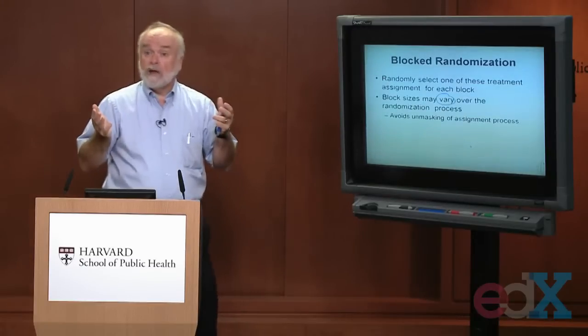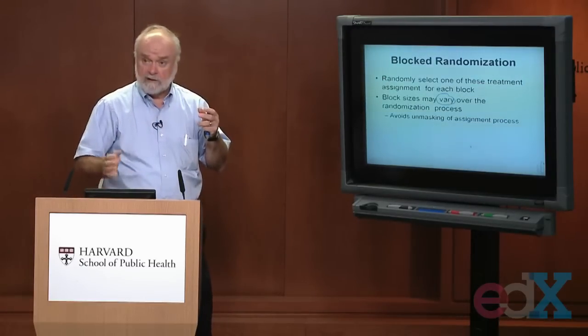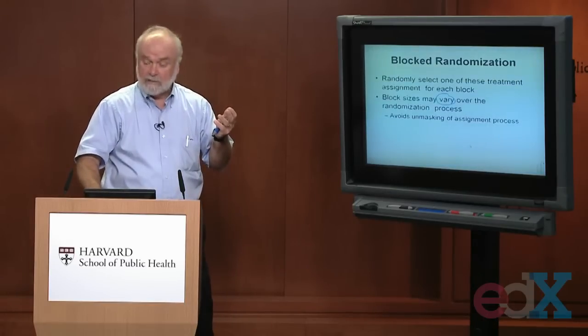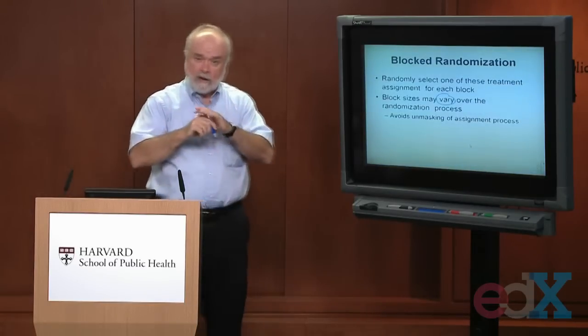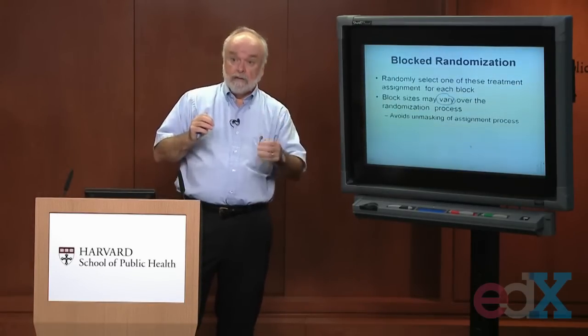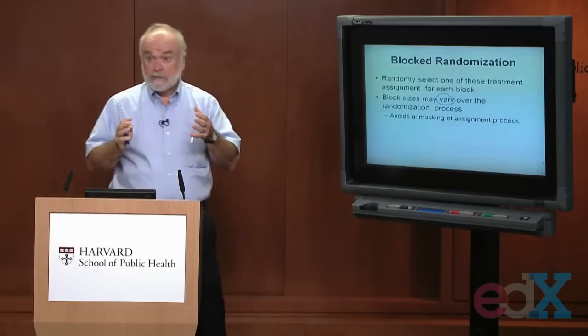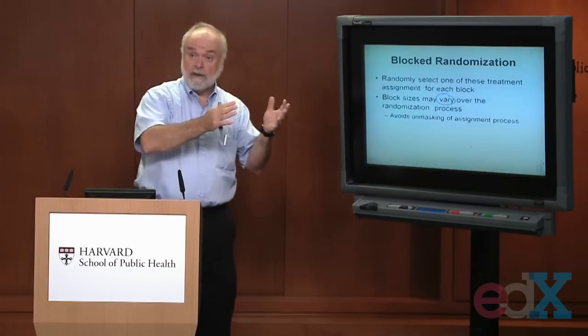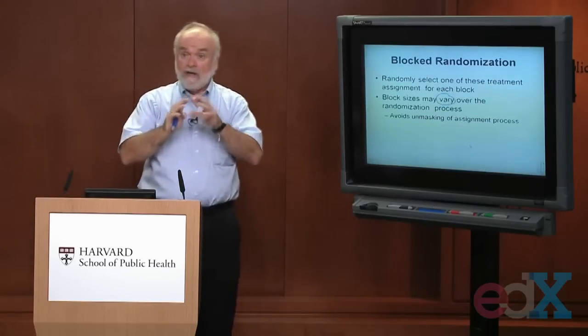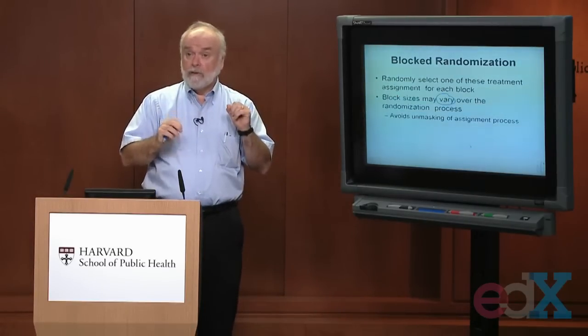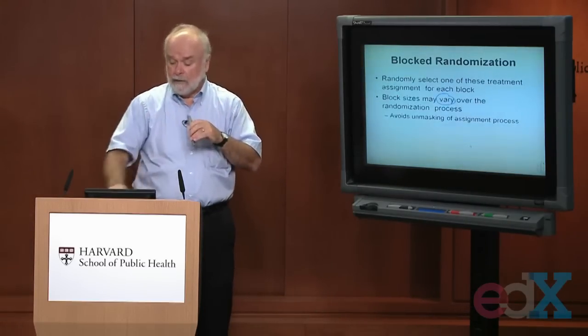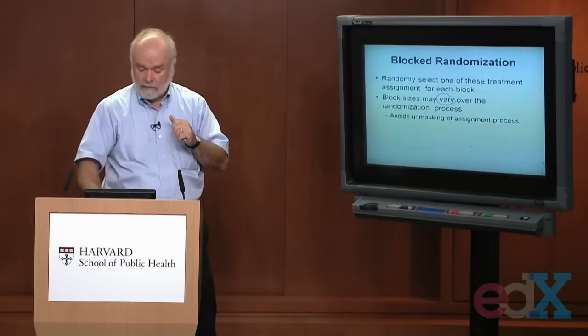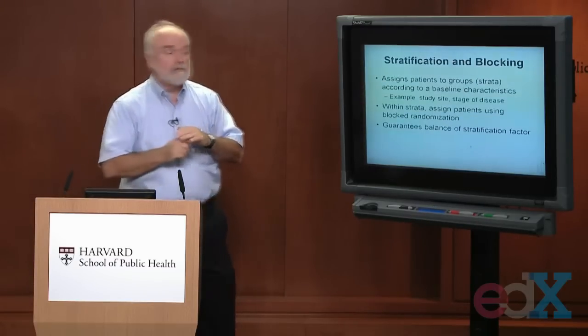That's how blocked randomization works versus simple randomization. Why does blocked randomization help in small trials to achieve balance where simple randomization might not? Remember the study with 10 elderly people: with a coin flip, it's possible six get treatment A and four get treatment B. We want to guarantee five get treatment A and five get treatment B. That's where blocking comes into play along with something called stratification.